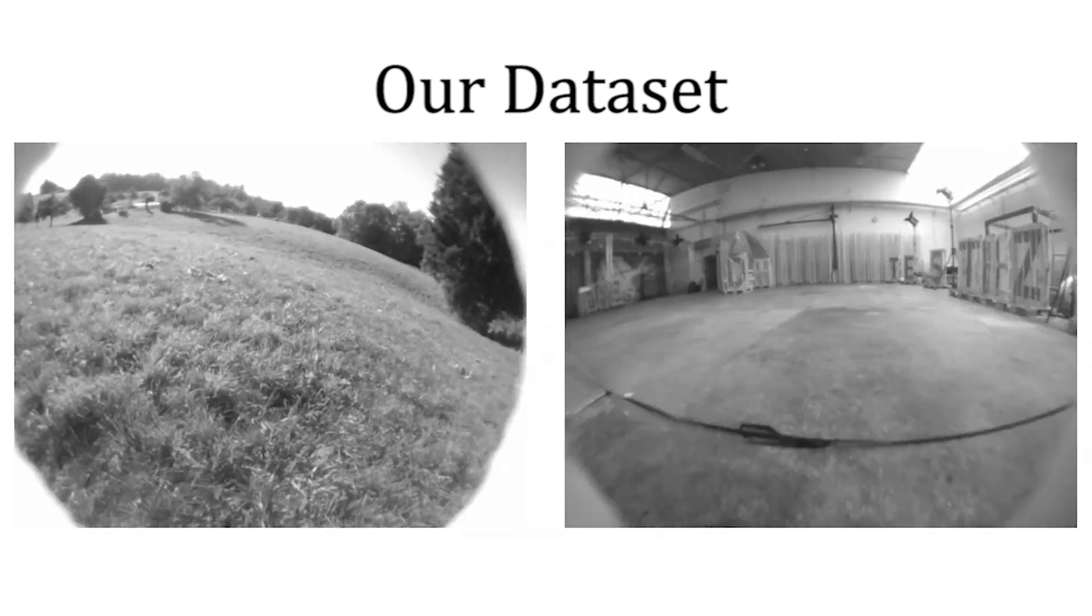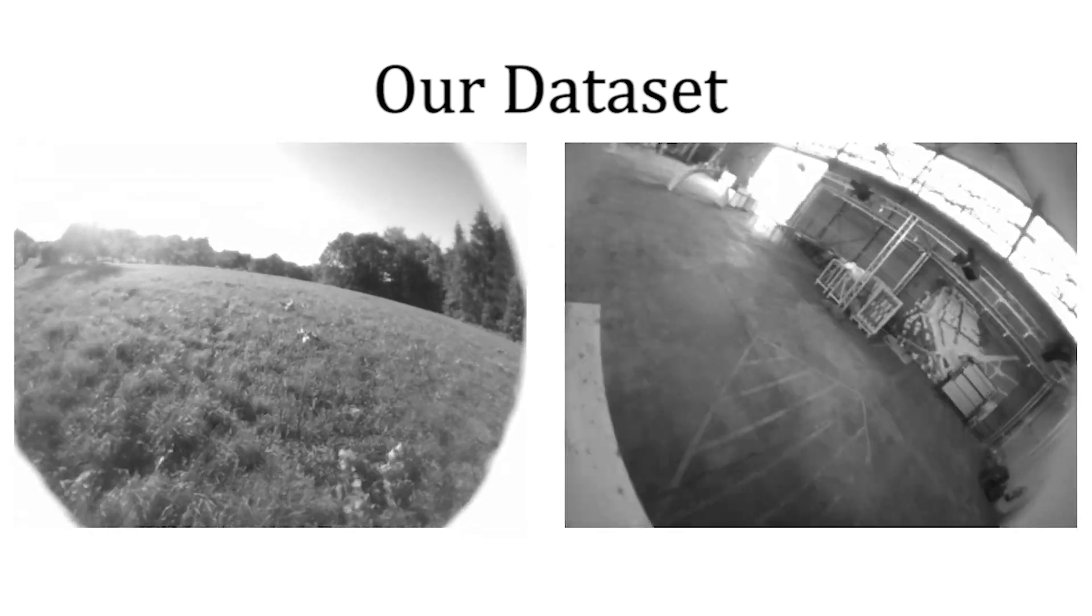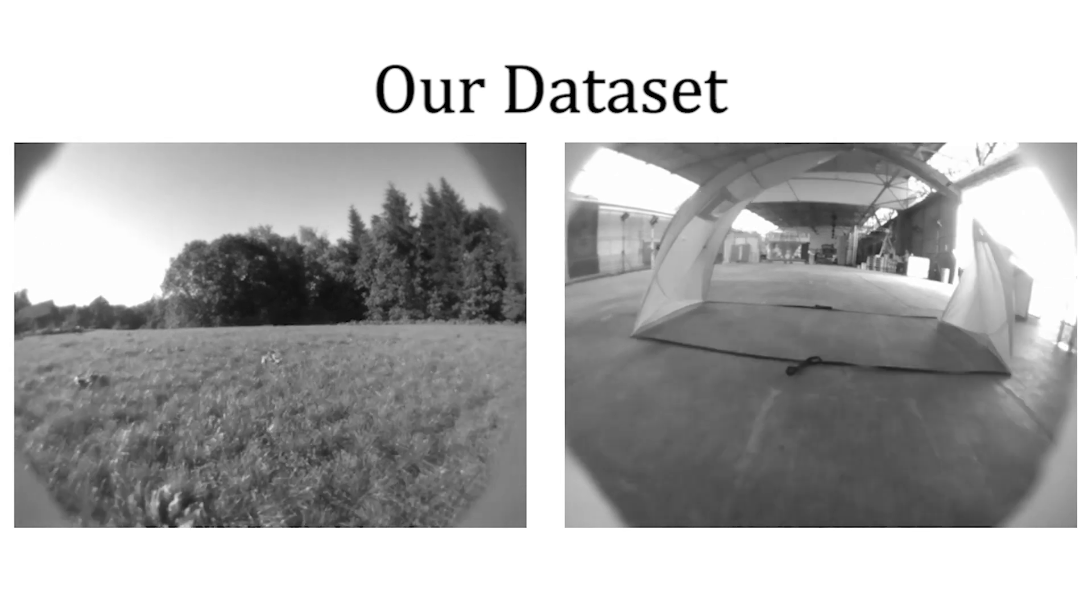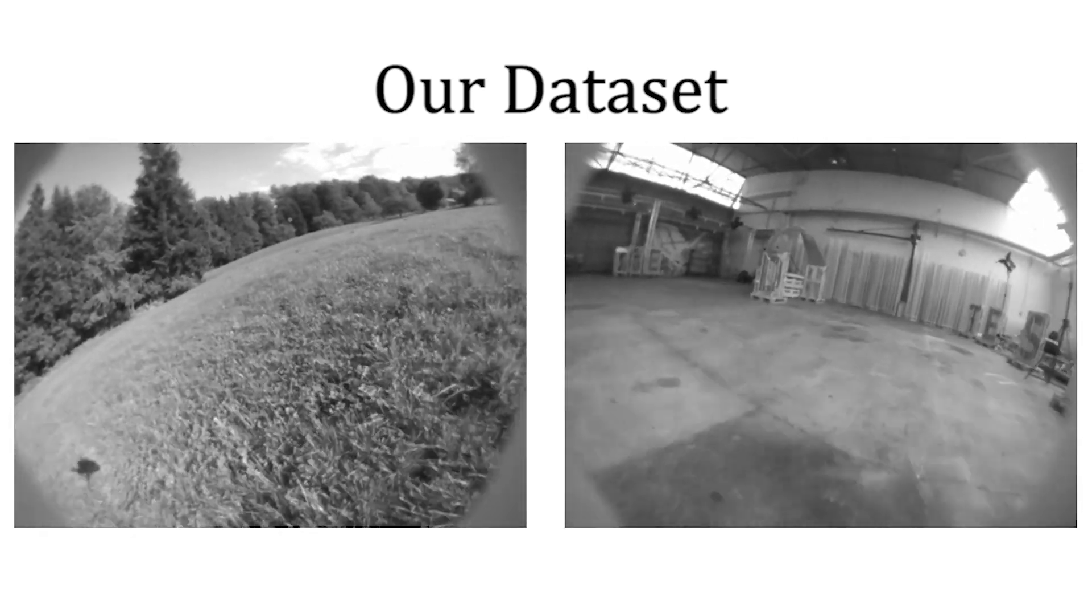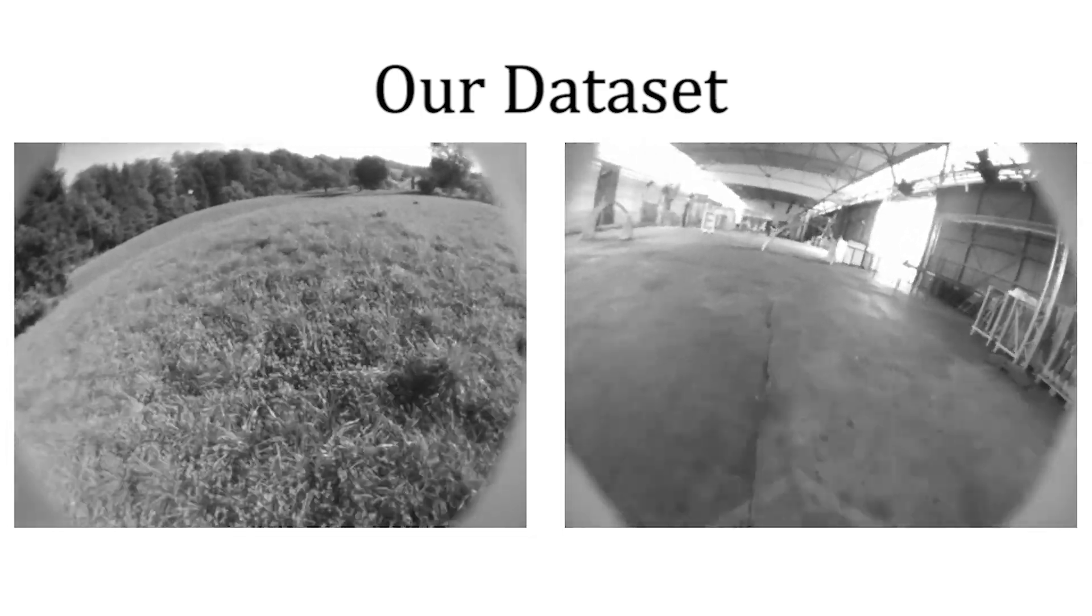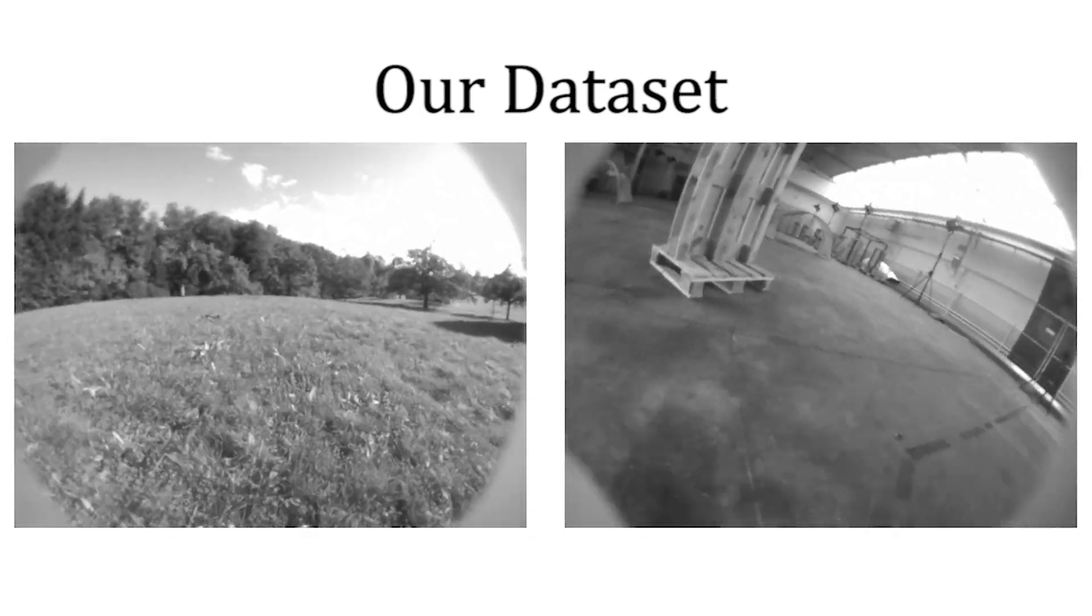We introduce the RPG FPV dataset, the most aggressive visual inertial odometry dataset to date. Large accelerations, rotations, and apparent motion in vision sensors make aggressive trajectories difficult for state estimation.